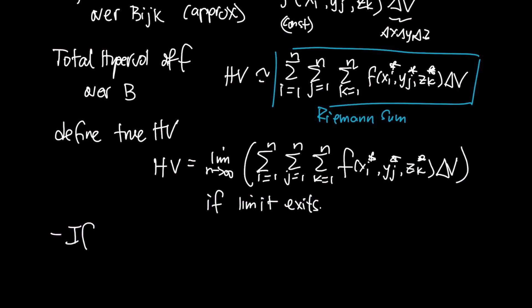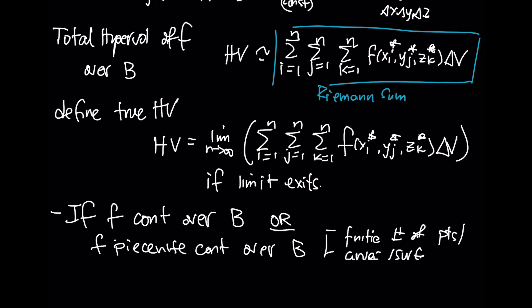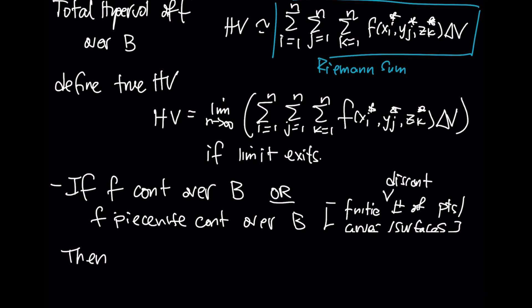This will be the definition of the hypervolume if this limit exists. As before, it can be shown that if F is continuous over this box B, or if F is piecewise continuous over this box B, it will be sufficient for this limit to exist. Now piecewise continuous means a finite number of points or curves or surfaces of discontinuity. Then we will say that this function is integrable and this limit exists.